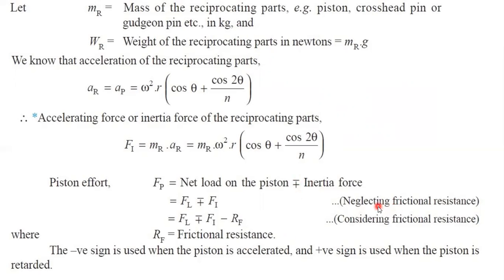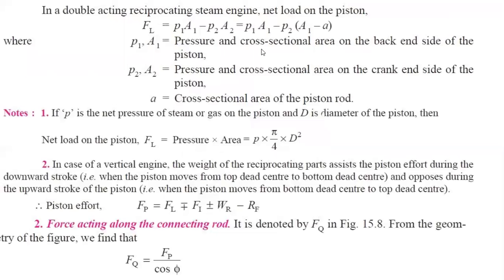In the first case, if the frictional force is not given it is neglected. If frictional force is given, add minus RF, and this minus applies to both acceleration and retardation since friction acts in the opposite direction. RF is the frictional resistance. For a double acting reciprocating steam engine, we have two different pressures and two different areas, so the net load on the piston is written as P1A1 − P2A2, where A2 = A1 − A. P1 and A1 are the pressure and cross-sectional area on the back-end side, and P2A2 is the pressure and area on the crank-end side. A represents the cross-sectional area of the piston rod.